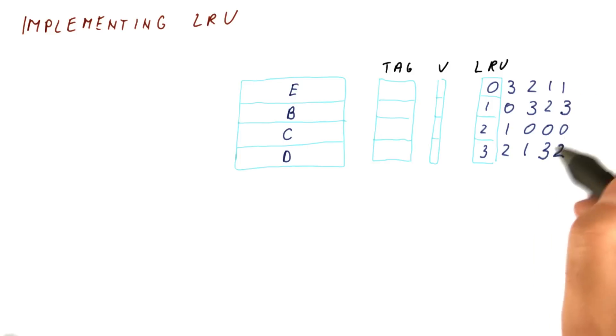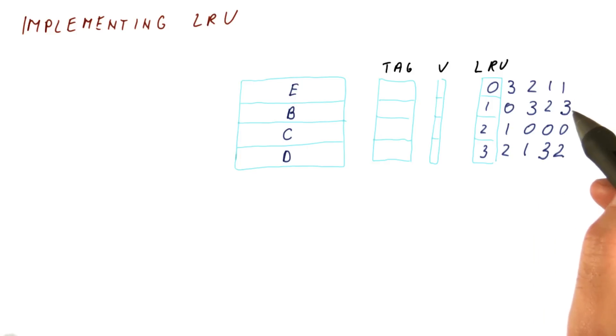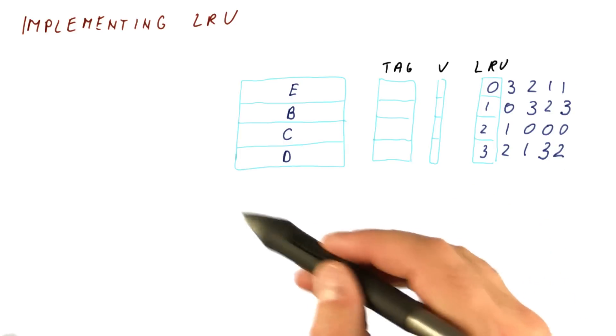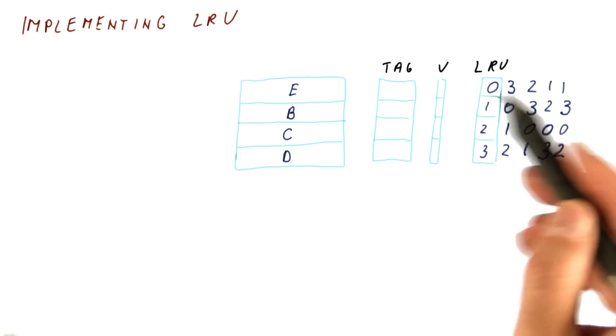So now you know how to maintain the LRU counters properly. After every step, you can verify that the counters have different values. If they don't, then you probably made a mistake somewhere. So as you can see, maintaining LRU is relatively complicated.